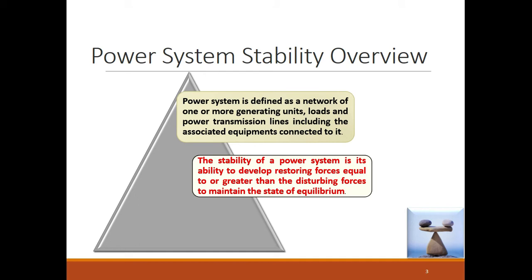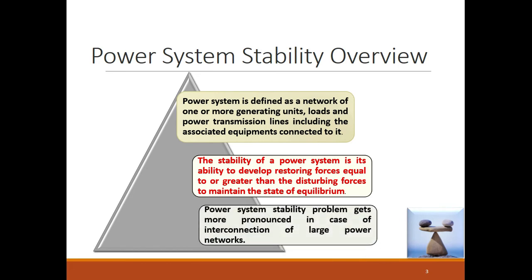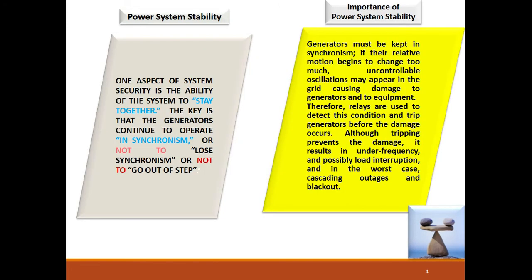In the event of any disturbance, if the power system has the capability of counterbalancing that disturbance by producing restoring forces and attaining equilibrium once again, that is what we call power system stability. The power system stability problem gets more pronounced in the case of interconnected large power systems. It is very much essential to run the whole power system in the mode of stability.